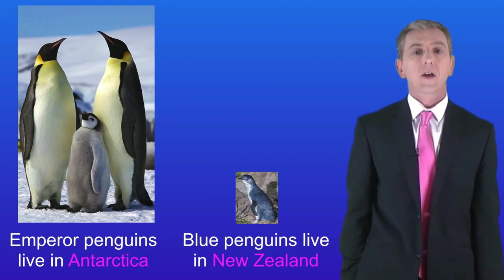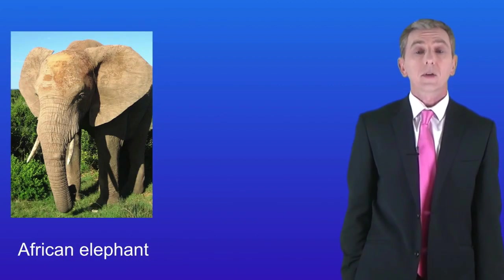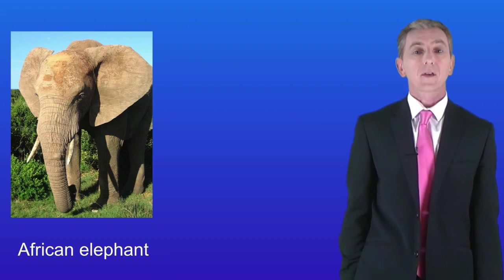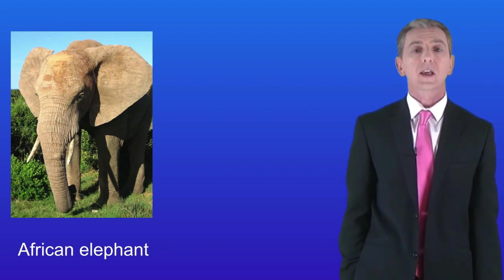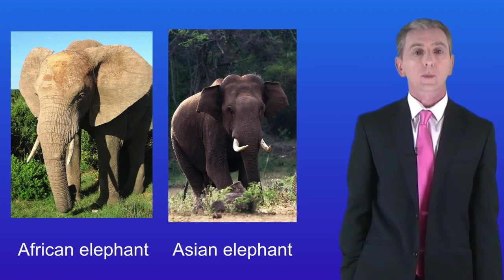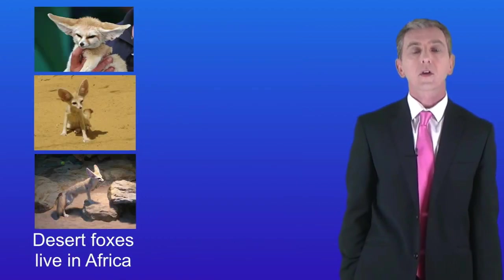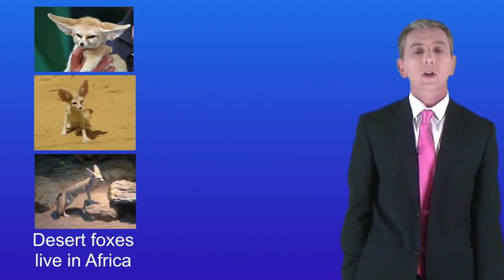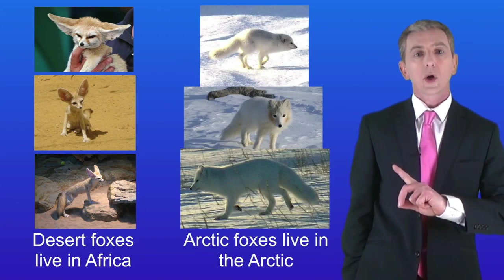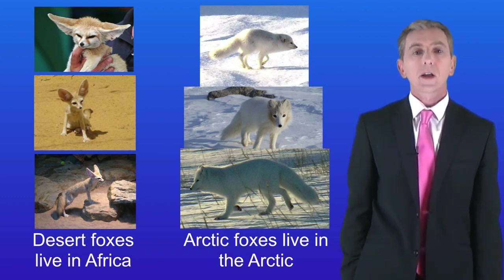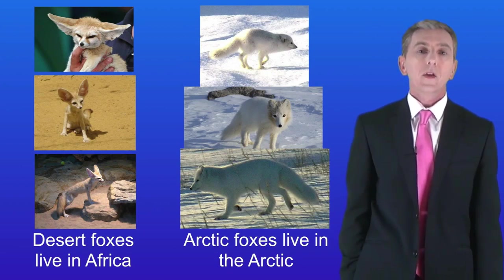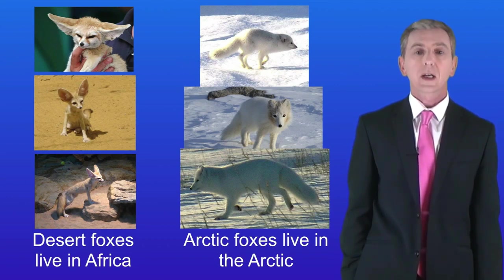Animals with a large surface area will lose heat faster. We can find elephants in both Africa and in Asia, but African elephants have a real problem with heat. Africa is really hot and African elephants have to be able to lose heat quickly. To do this, African elephants have really large ears with a huge surface area, so warm blood passes through these ears and loses heat. Asian elephants don't have such a big problem with heat so their ears are smaller. Desert foxes, which live in hot conditions in Africa, have massive ears giving them a really large surface area helping them to lose heat. Arctic foxes, which live in the very cold conditions of the Arctic, have very small ears, meaning they have a relatively small surface area so they lose heat less quickly than the desert fox.